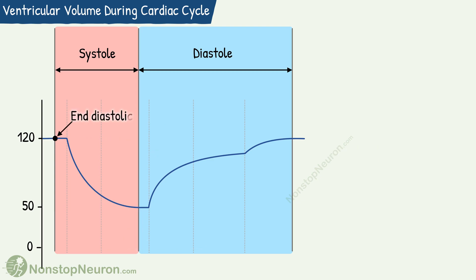End diastolic volume, as per the name, is the volume of blood in a ventricle at the end of the diastole. Naturally, this is the maximum volume that a ventricle achieves. Normally it is about 120 ml in each ventricle.